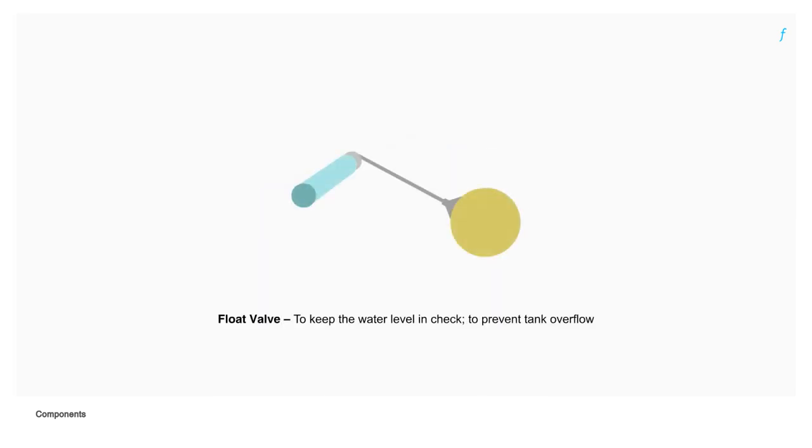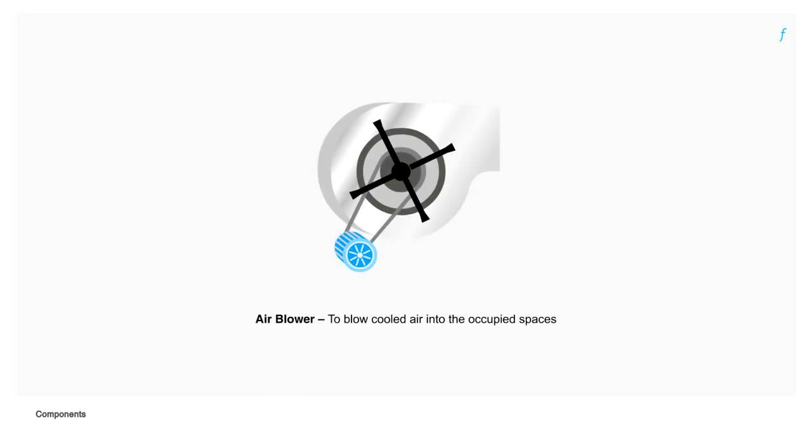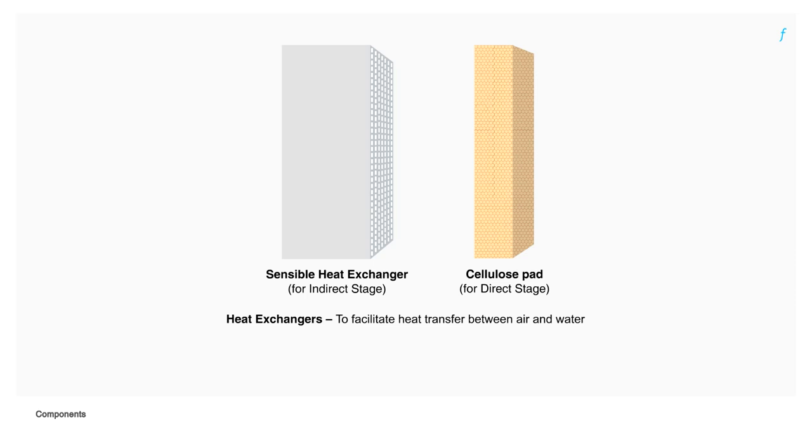A float valve keeps the water level in check and prevents tank overflow. An air blower is used to blow cooled air into the occupied spaces. Heat exchangers facilitate heat transfer between air and water.